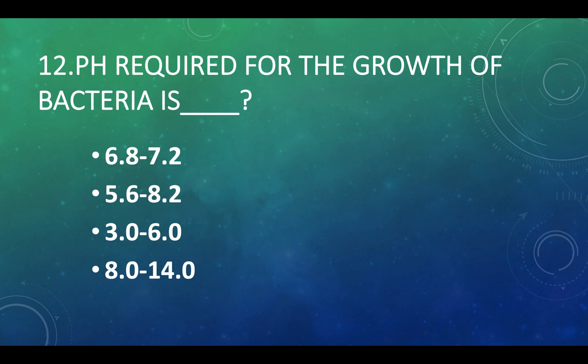pH required for the growth of bacteria: Option A — 6.8 to 7.2, Option B — 5.6 to 8.2, Option C — 3 to 6, Option D — 8 to 40. Answer: Option A, 6.8 to 7.2.